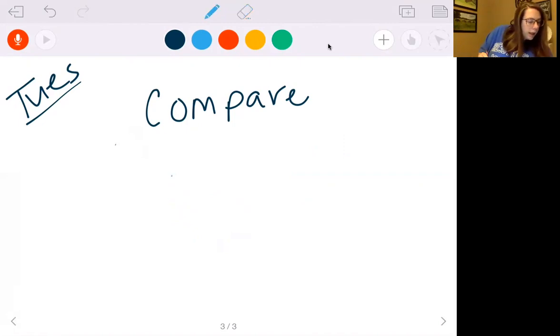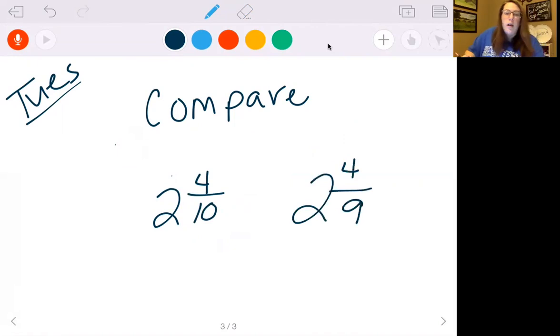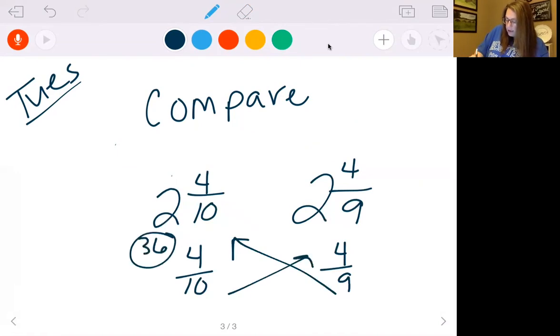Let me show you one if you had a mixed number. If you had one like two and four tenths and two and four ninths, let's go ahead and just do the decimal because the whole numbers are the same. Nine times four is thirty six. Ten times four is forty. So thirty six is less than forty. So two and four tenths is less than two and four ninths. Just a quick and easy way.